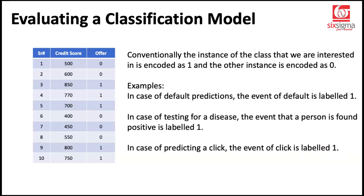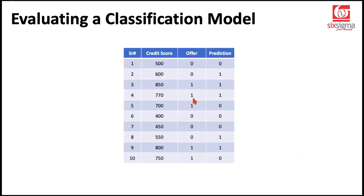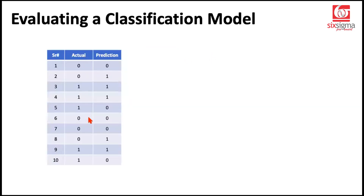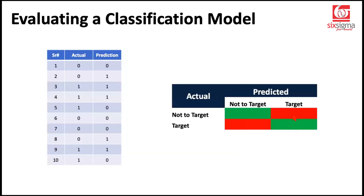Now we have some input, some actual output, and once we build a model we'll come up with predictions. We'll refer to one column as actual and the other as prediction. For a confusion matrix, we only need to concentrate on these two columns — we don't need the input because we are evaluating a model, not creating one. When we have these two columns, we can come up with a two-by-two grid, which is known as the confusion matrix.